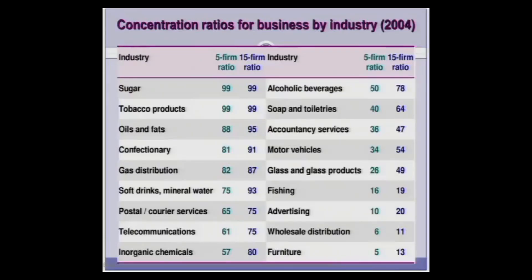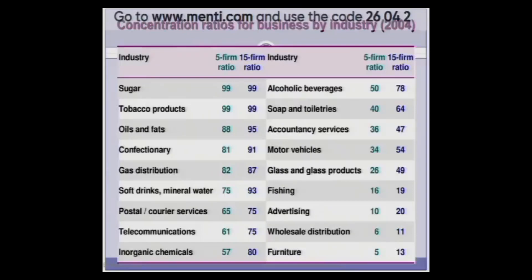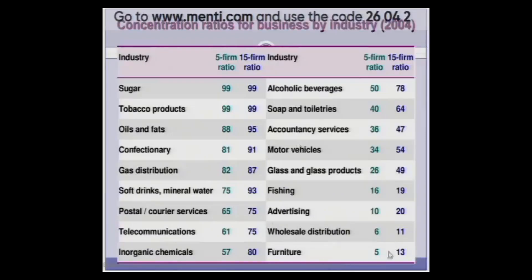To determine whether oligopoly exists in a market, you can calculate concentration ratios. You take the sales of, say, five firms and divide by the whole industry's sales — that's the five-firm concentration ratio. For example, 99% of the sugar market was controlled by five firms, and similarly five firms controlled 99% of the tobacco market in 2004. More competitive industries like furniture, wholesale distribution, advertising, and fishing have lower ratios — five firms may make up only 16% of the market, meaning the remaining 84% is served by many other firms.